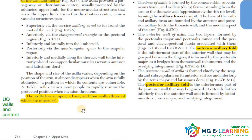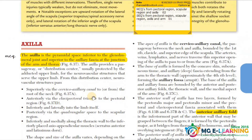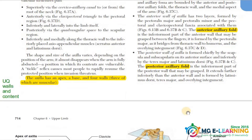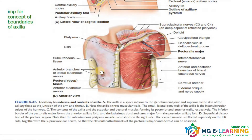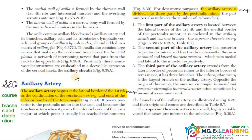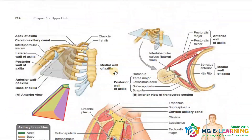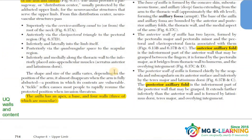The university question covers the boundaries and contents of axilla. This is an important university question. You should remember it well. You can see this in figure 6.37, which shows the anterior axillary fold and the posterior axillary fold.